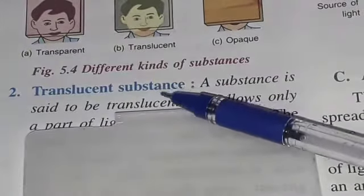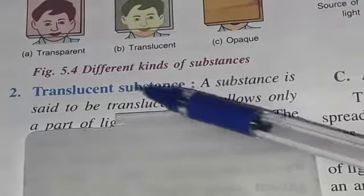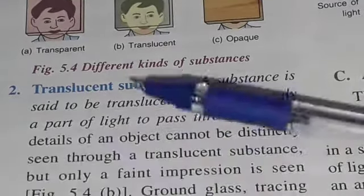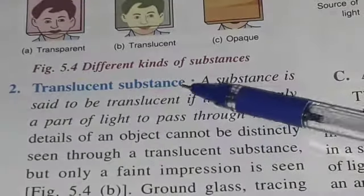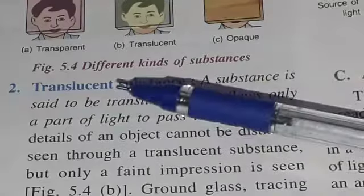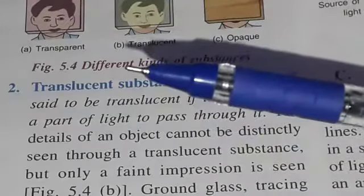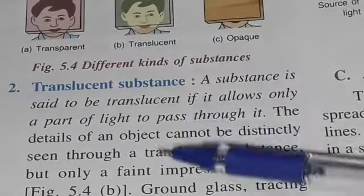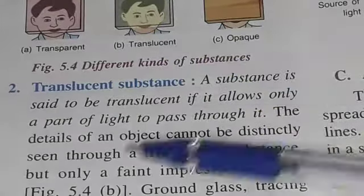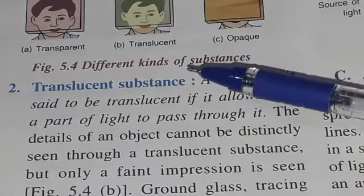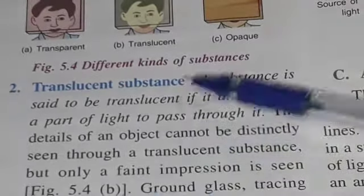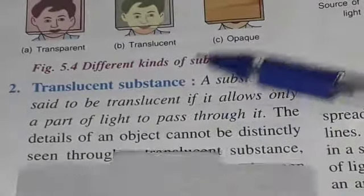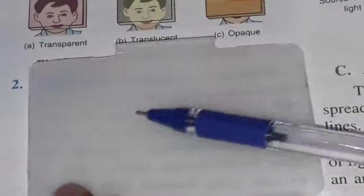Without the translucent material, you can see the image very clearly. It means between this camera and the statement, there is air, and light can pass through air because air is a transparent medium. That is why you are able to see it clearly.